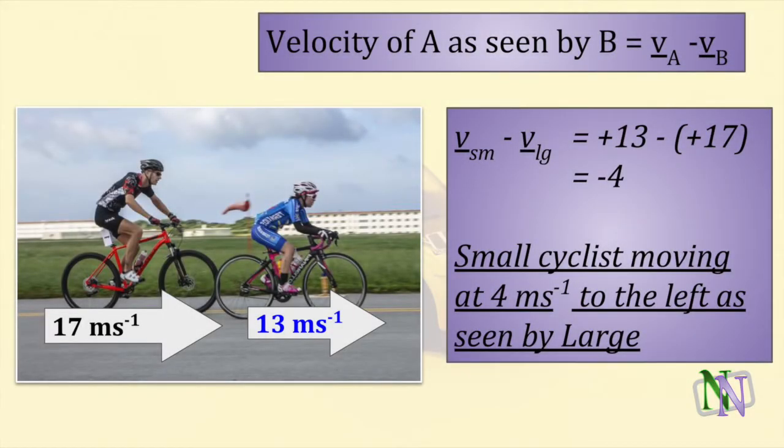In this example, the smaller cyclist is travelling to the right at 13 metres per second, and the larger cyclist is moving in the same direction at 17 metres per second. Taking the right-hand direction as positive, the velocity of small, as seen by large, is 13 minus 17, which is minus 4 metres per second. In other words, the small cyclist seems to be moving at 4 metres per second to the left, as seen by the large cyclist. If you imagine yourself as the large cyclist, this is what you would see, the other cyclist coming closer to you.